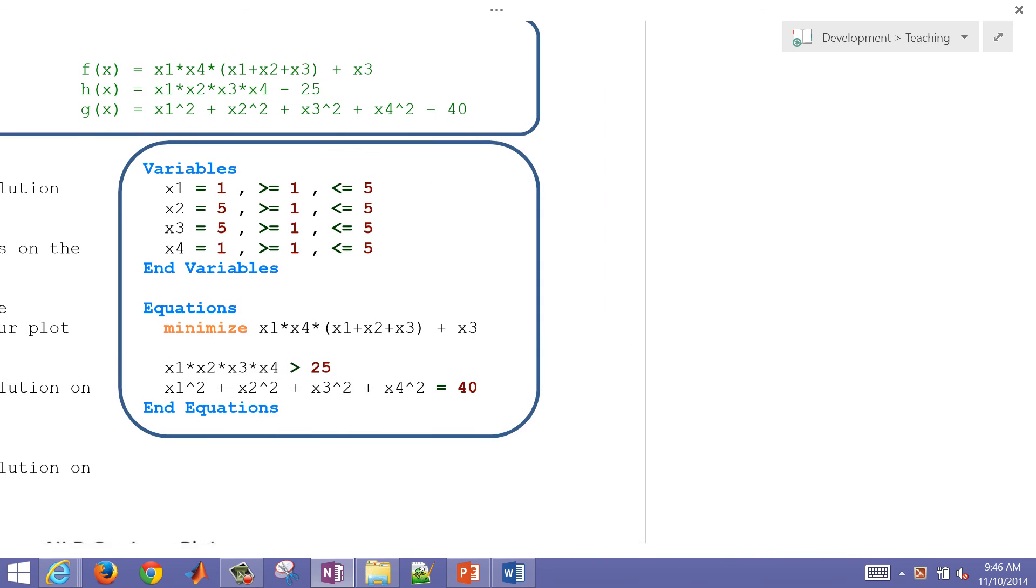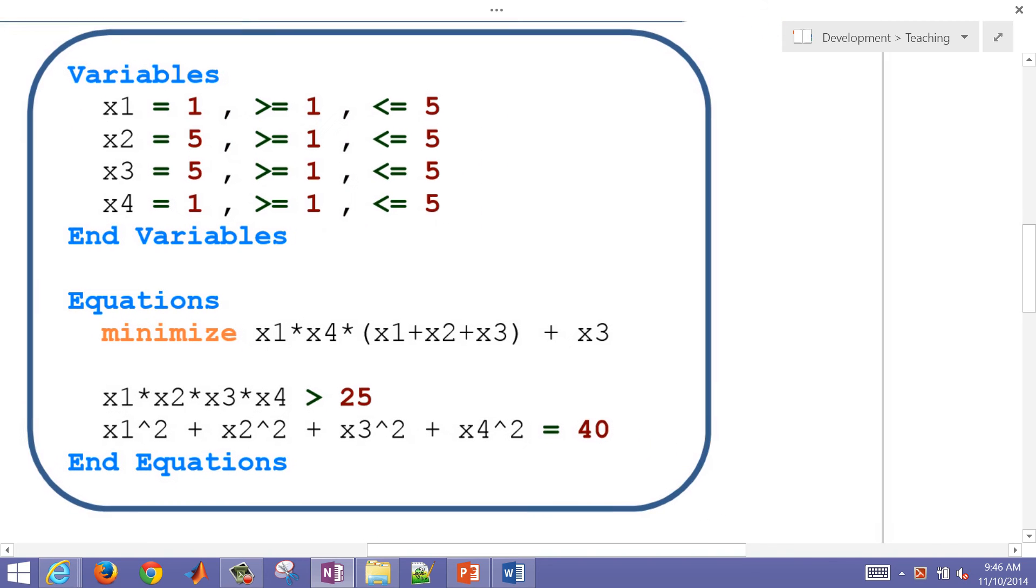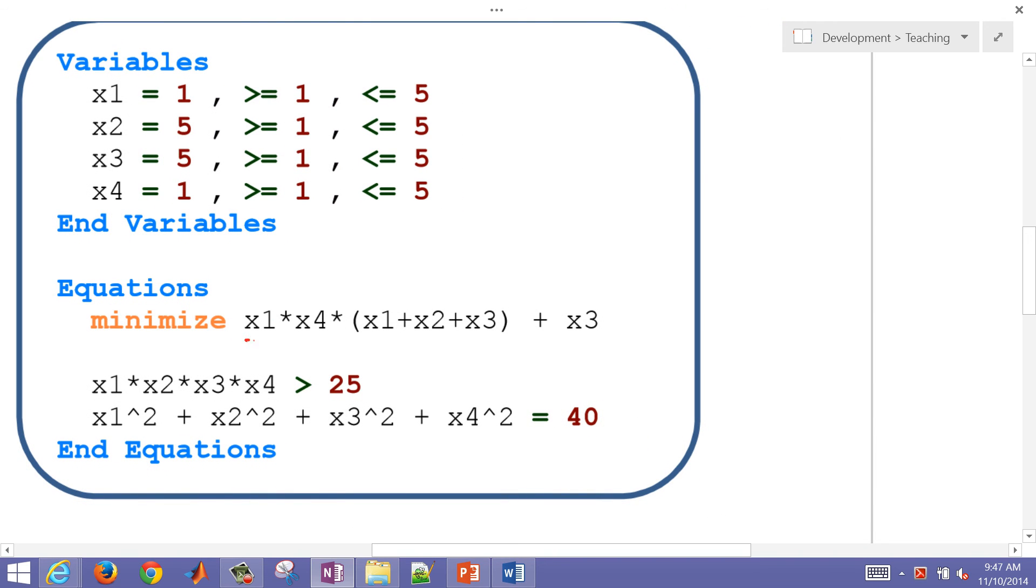This is actually part of the Hock-Schittkowski test suite for optimization problems, and we're going to minimize this objective function. So we have four variables, x1 through x4, and we're going to give them these initial guesses: 1, 5, 5, and 1. We're going to say that all of those variables have to be greater than or equal to 1 and also less than or equal to 5. So between 1 and 5, and we're going to try to minimize an objective function that is a function of all four of those variables.